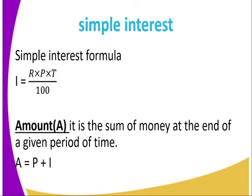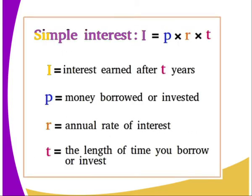That is the reason why we get the formula for calculating simple interest: Interest equals rate times principal times time, divided by 100. The 100 comes from the rate, since rate is given in percentage. We also have another term — the amount. It is the sum of money at the end of a given period of time, which includes both the principal plus the interest. So: Simple Interest = (Principal × Rate × Time) / 100, where time is the length of time you borrowed or invested.